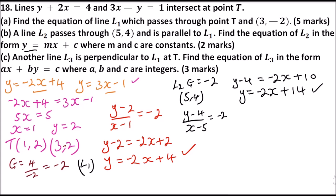For part c, line L3 is perpendicular to L1. Since the gradient of L1 is negative 2, the gradient of L3 equals one half, because negative 2 multiplied by one half equals negative 1. This line L3 is perpendicular to L1 at point T, which we found is (1, 2), so we have both a gradient and a point.